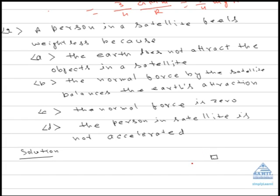Now let us take problem number two: a person in a satellite feels weightless. In this problem we need to understand the region of weightlessness felt by a person inside a satellite. To understand this, let us consider that the person is standing on a weighing machine.